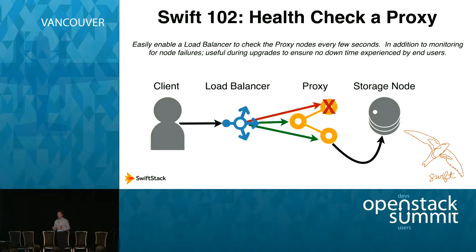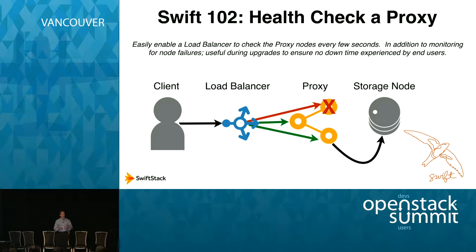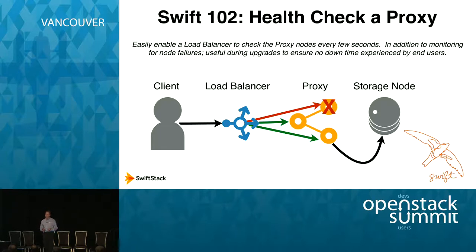The first middleware I want to discuss is HealthCheck. What HealthCheck does is really simple — it lets you know if a proxy node is up or down. Normally you put a load balancer in front of your Swift cluster, and whether that's an F5 or a NetScaler, you'd write complicated logic to try a PUT every 30 seconds or a GET every 30 seconds. But with HealthCheck, we go to a single address, and if the node's working properly it responds with OK, and if not, you get no response.